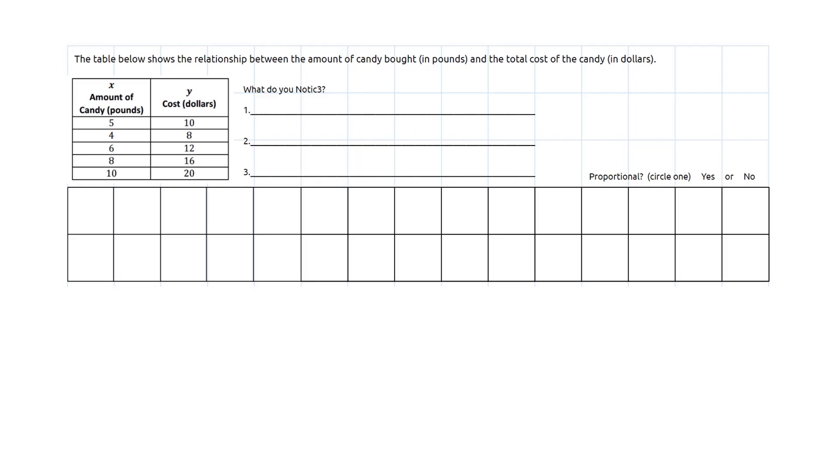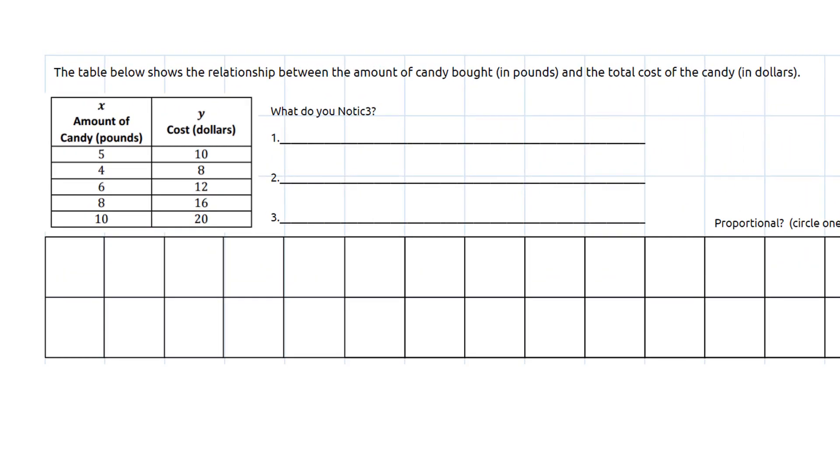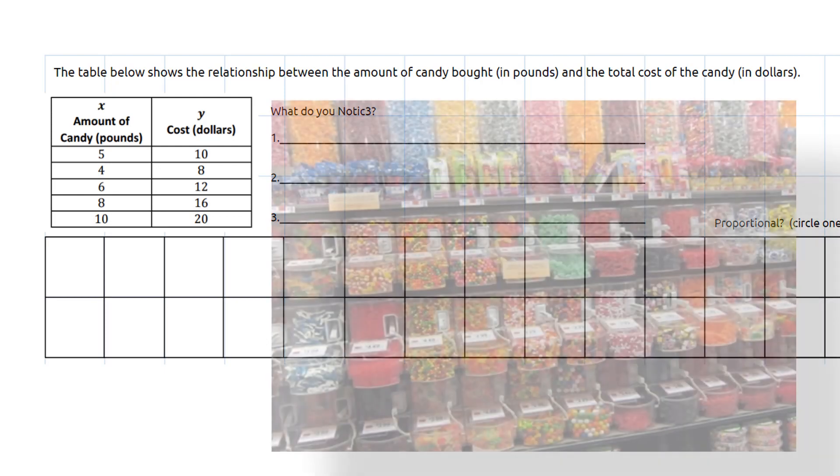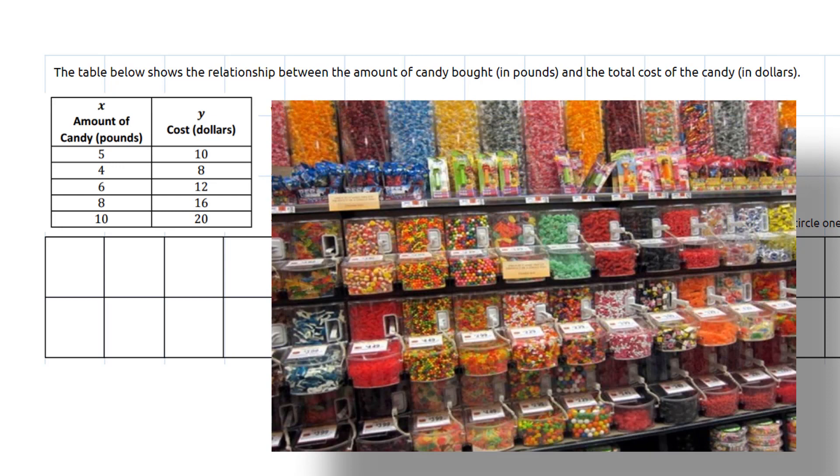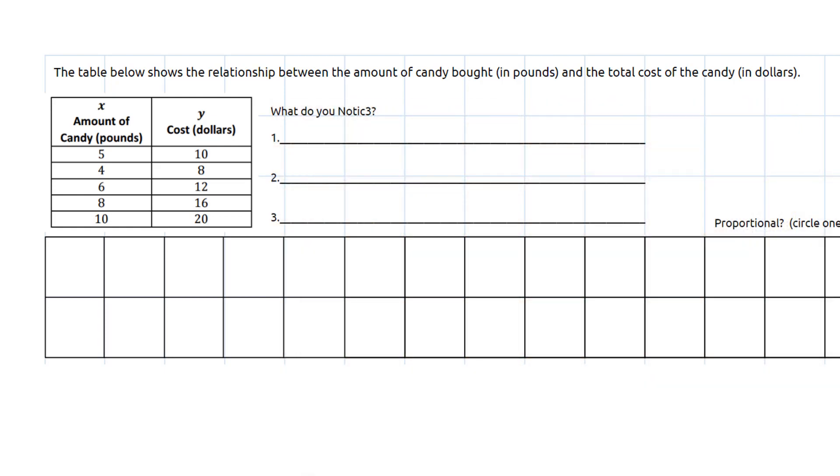Let's take what we've learned with the real world example of a vending machine and apply it to a question that's given to us. It says the table below is going to show a relationship between the amount of candy that you can buy in pounds and the total amount of candy in dollars that you're going to spend. So if you've gone to a bulk candy section, this question is kind of for you and what you're about to see. There are vocab words that go with what we're trying to find, the constant of proportionality.